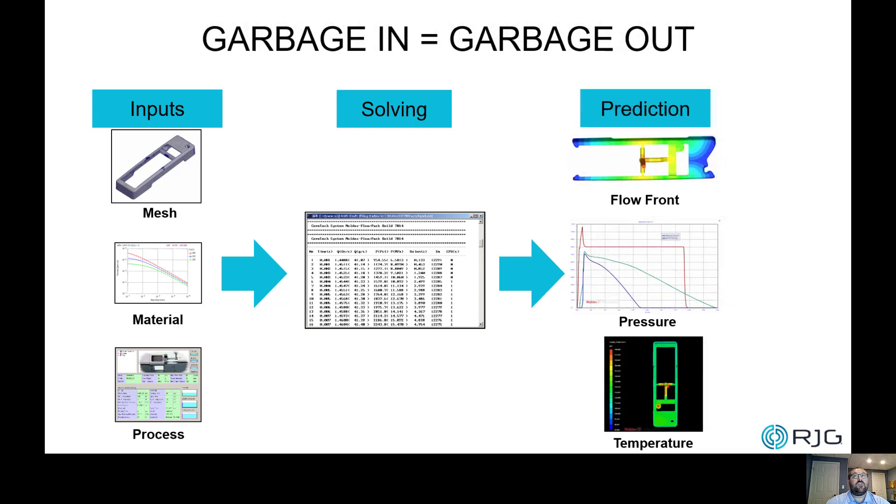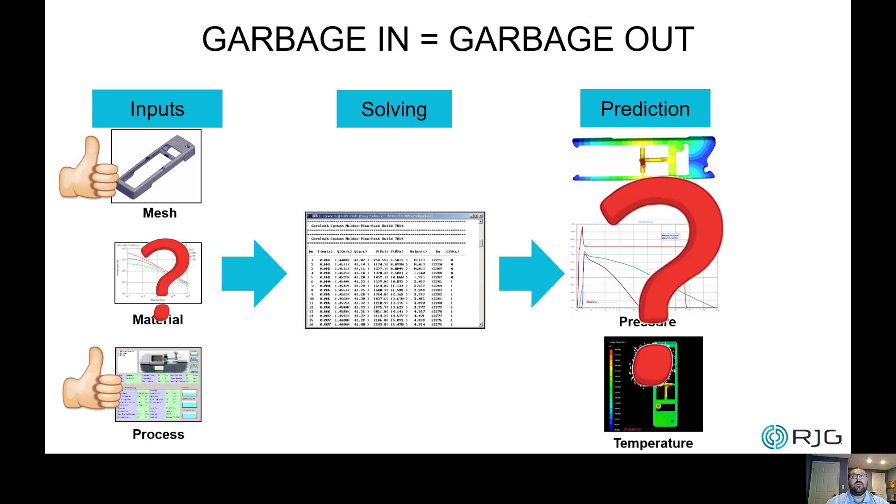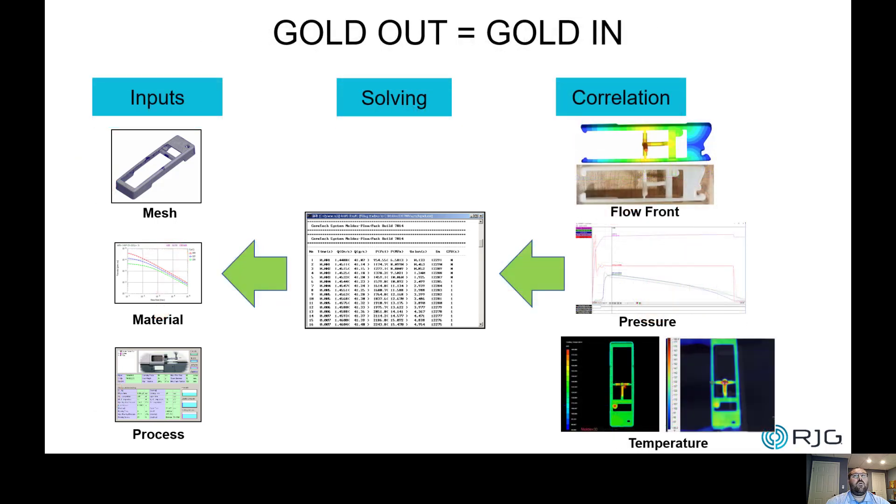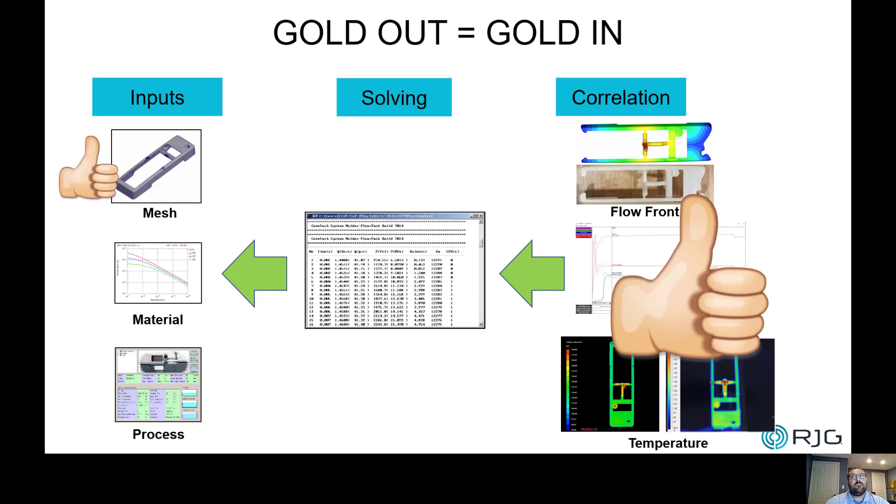In the case study shared earlier, this was a material-induced discrepancy. As the material parameter is skewed, the prediction of the cycle time also went awry. In the simulation world, a phrase that comes to mind is garbage in equals garbage out. How about if we just reverse it? When a decent correlation study is achieved, what can we get out of it? Assuming the mesh is perfectly done, the process is quite matched with the actual, and the material should be accurate as well.